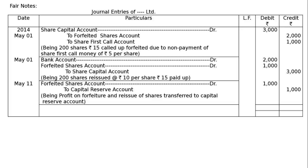May 11 — Forfeited Shares Account debited to Capital Reserve Account. We made a profit of Rs.2,000 forfeited from Mr. A, and gave a discount of Rs.1,000 to B, so the final profit is Rs.2,000 minus Rs.1,000 = Rs.1,000. Forfeited Shares Account Dr to Capital Reserve Account: Rs.1,000 each side. Being profit on forfeiture and re-issue of shares transferred to Capital Reserve Account. The totaling on both debit and credit sides will be Rs.7,000.